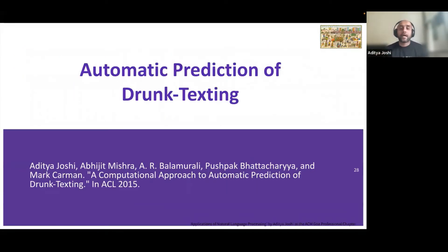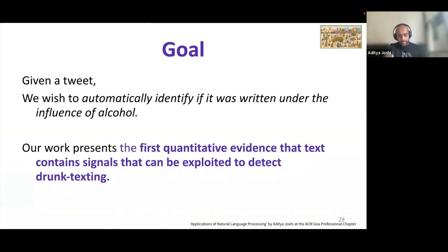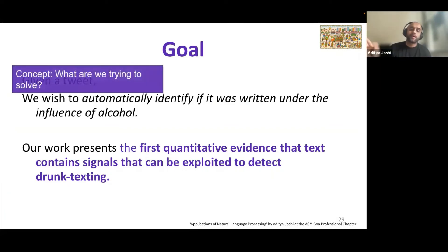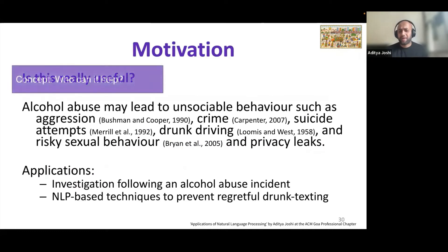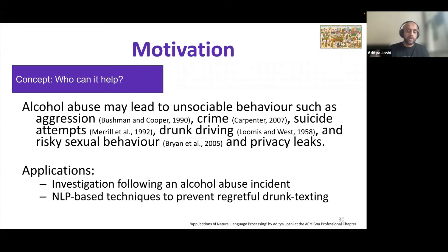Drunk texting is predicting if a given tweet was written under the influence of alcohol. Our concept was to apply NLP to detect whether a person is writing a tweet when drunk. Our motivation: alcohol abuse can lead to unsociable behavior, with links to aggression, crime, risky sexual behavior, and privacy leaks. We thought this approach could help prevent regretful drunk texting. Around that time, Google had implemented an approach where if you try to send an email on a Friday at 5pm, it would ask you to solve math problems — if you could solve them, the email gets sent; otherwise it's paused.